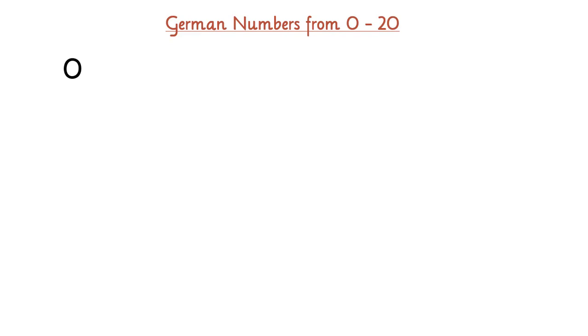Firstly we will start with zero, and in German we say null, null. And then it starts: one, eins, eins.